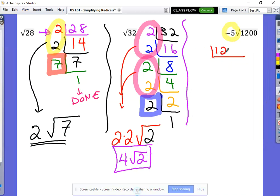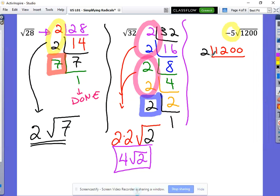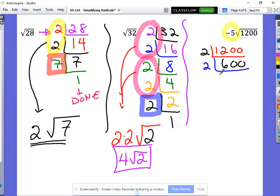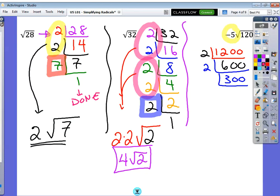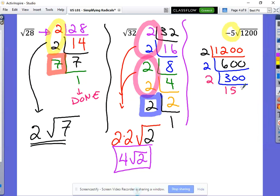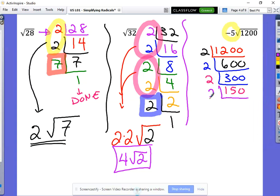So this one's going to take a little bit of time. But if we put 1,200 into our little box and we divide out our smallest number again, our smallest number is two. That leaves us with 600. All right, smallest number we can divide out of 600 is 2. That leaves us with 300. Smallest number we can divide out of 300 is 2. That leaves us with 150. Smallest number we can divide out of 150 is 2. That leaves us with 75.